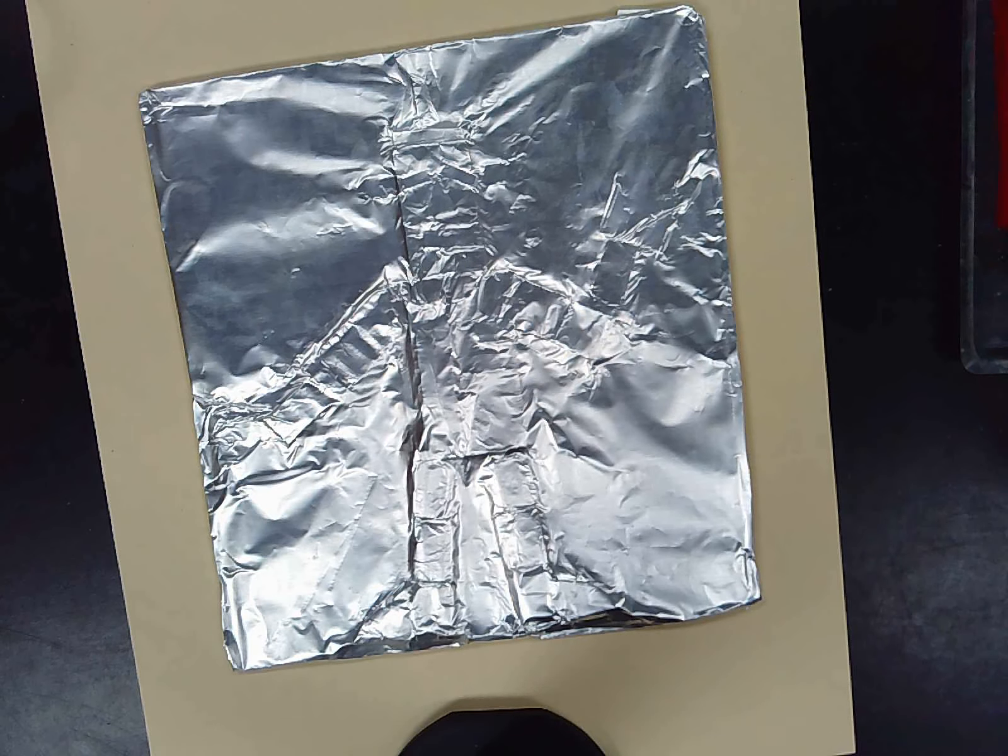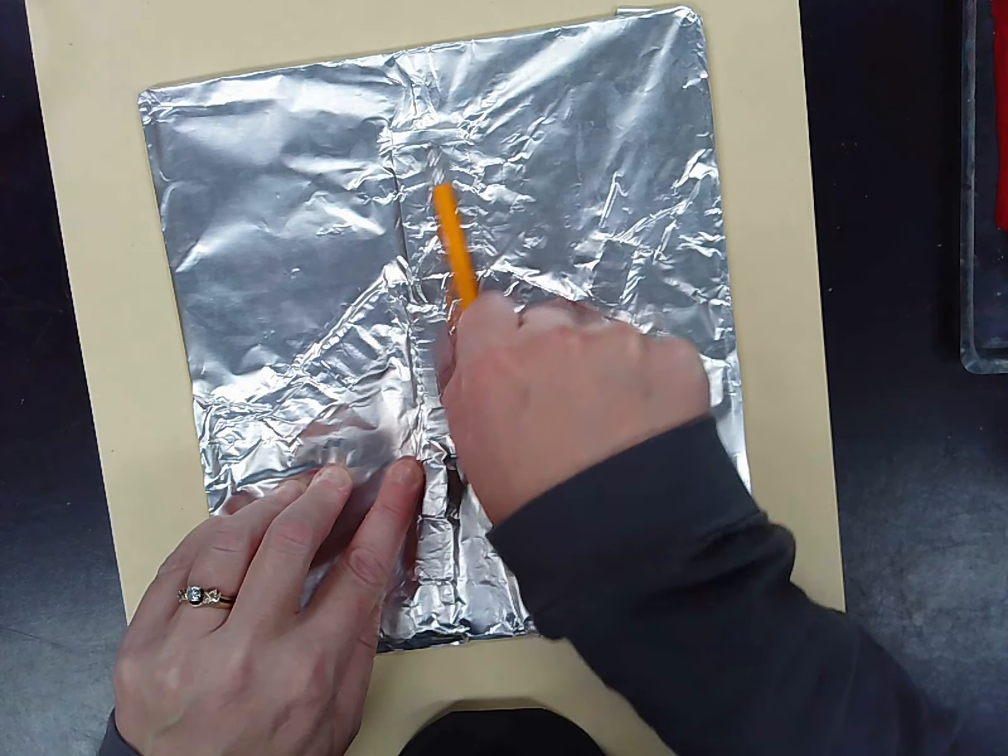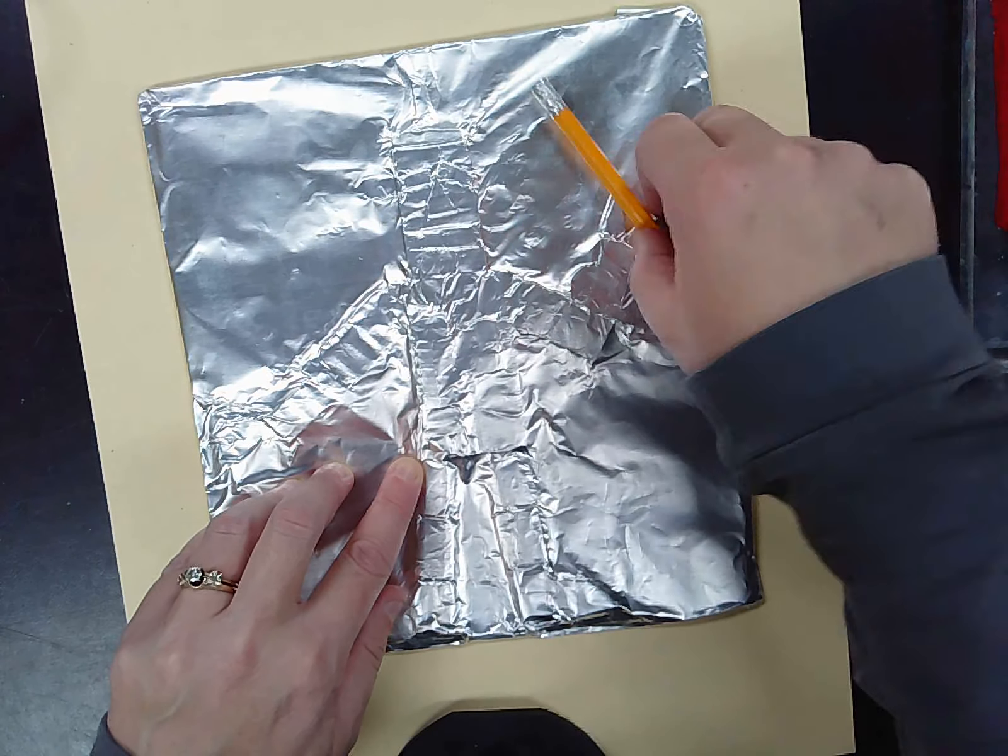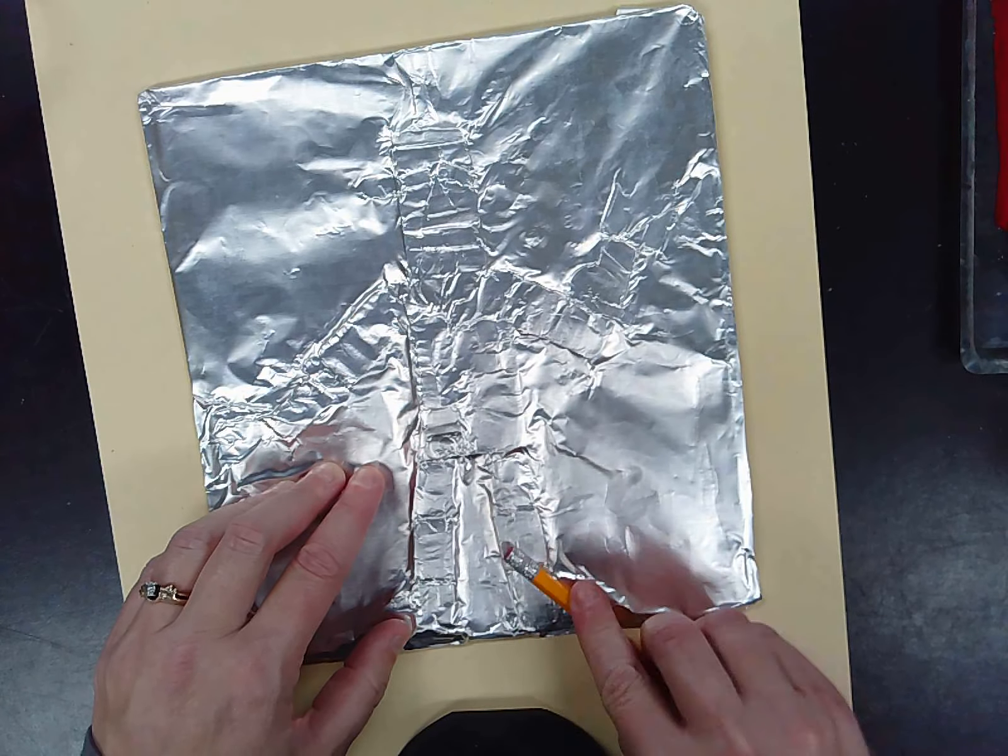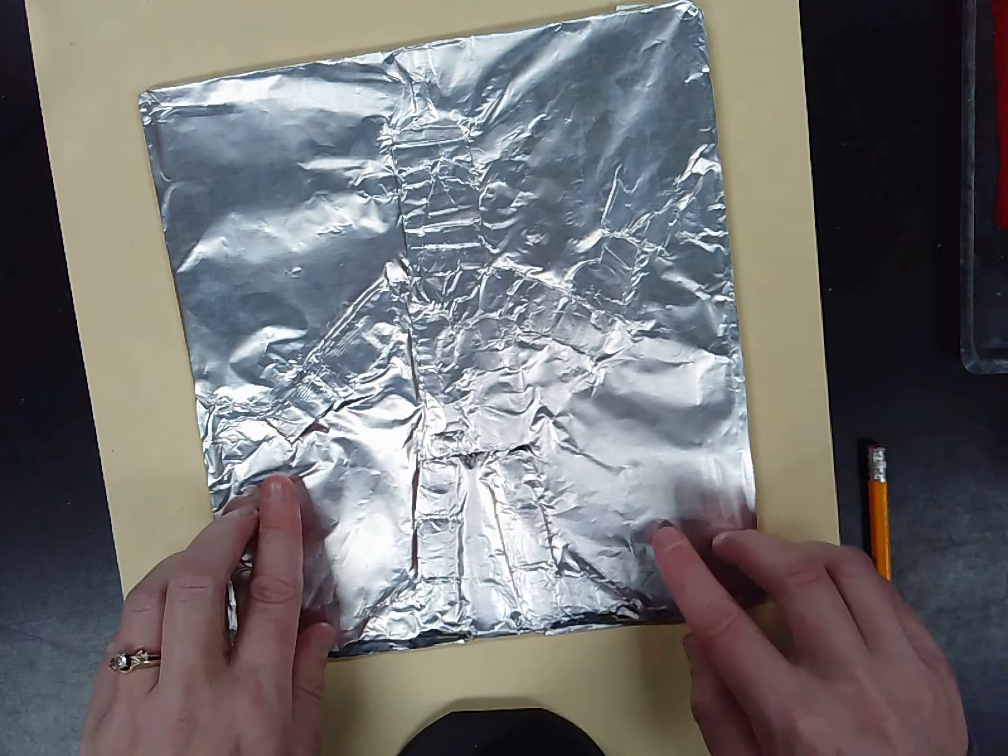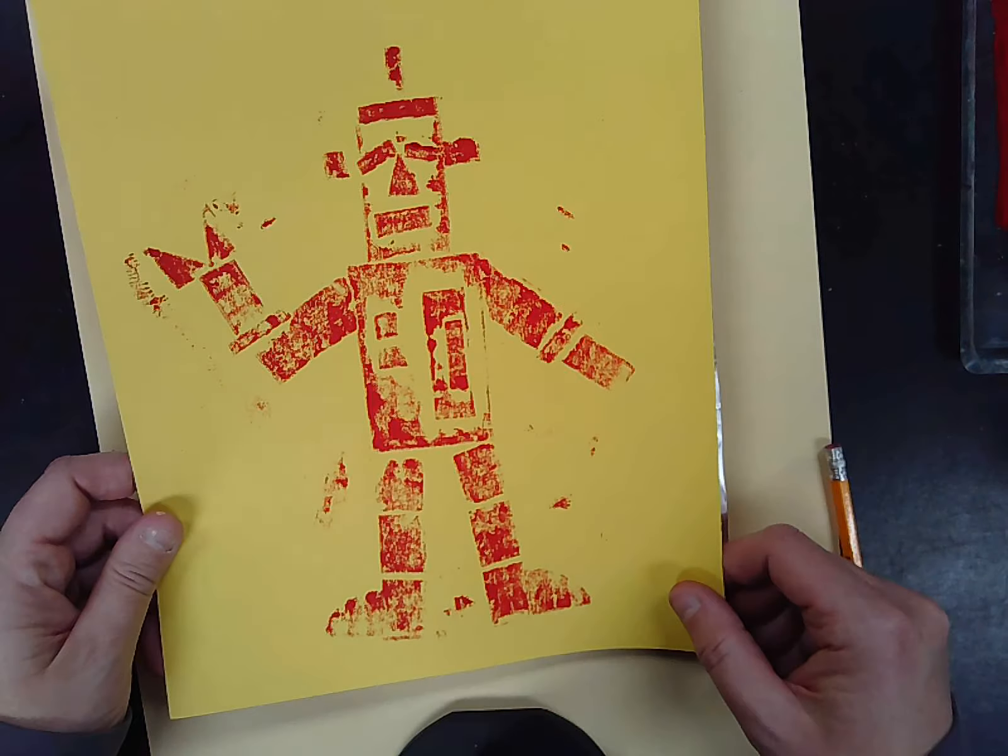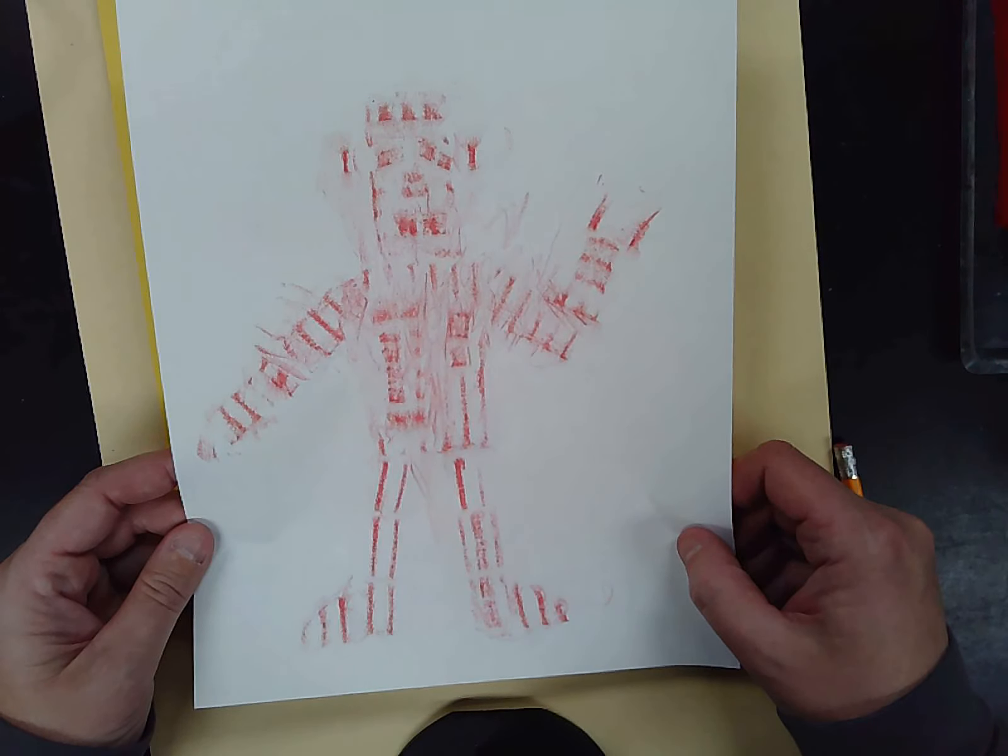Okay. All right, so whichever step you decide to take, there's the aluminum foil, printmaking, and crayon rubbing of my robot.